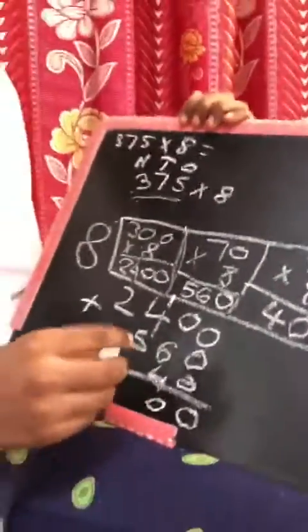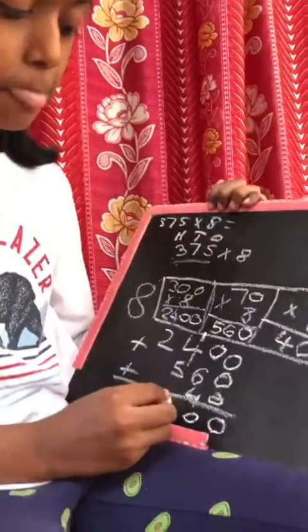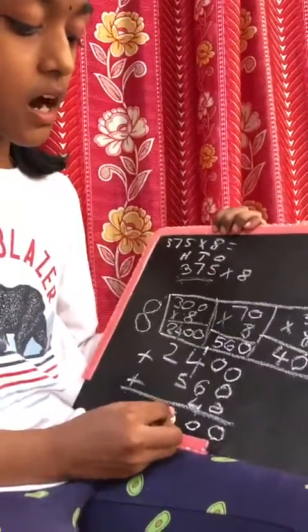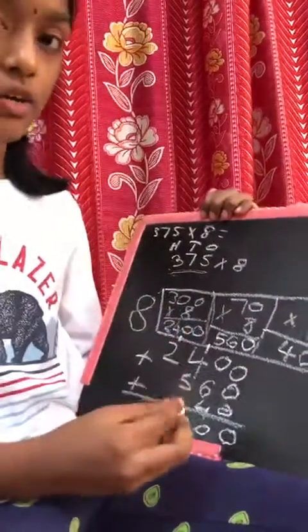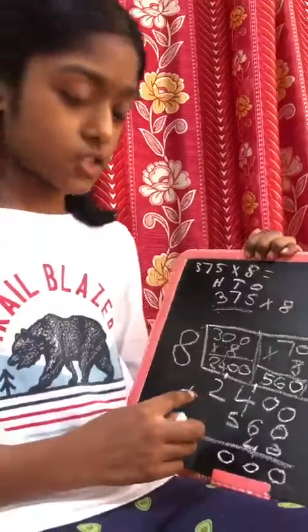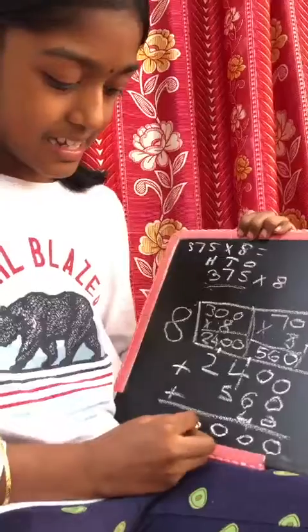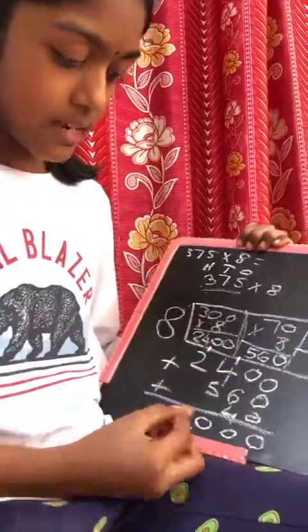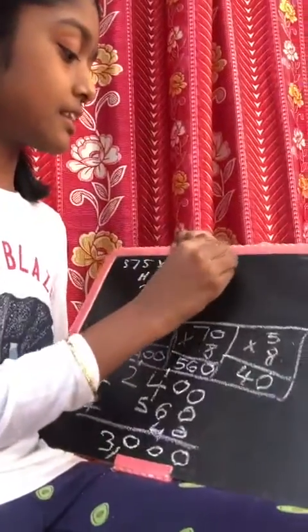4 plus 5 is 9. 9 plus 1 is 10. Put 0 in the 100's place and put 1 in the 1000's place. Next 2 plus 1. 2 plus 1 is 3. So the answer is 3000.